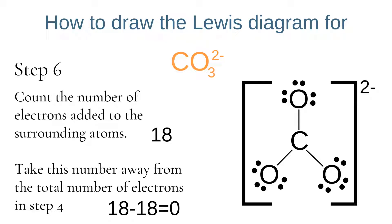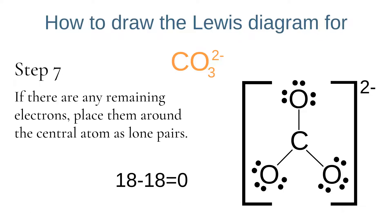Now we recalculate how many electrons we've added and how many more we still need to add. We count up the electrons added to the surrounding atoms: 3 times 6 is 18. We take this away from the 18 we still needed to add, giving us zero — so we don't need to add any more electrons to the structure.